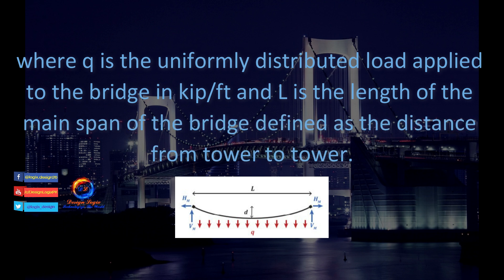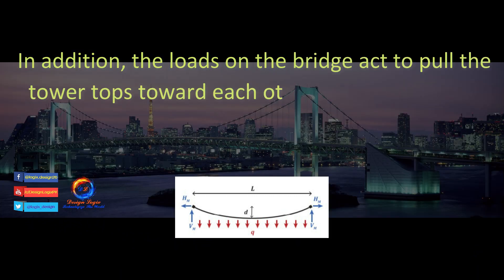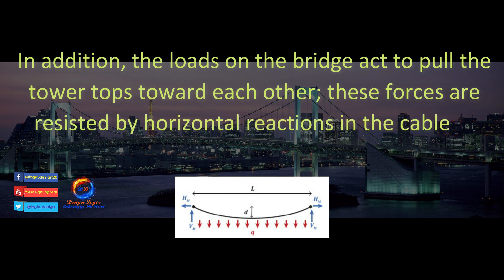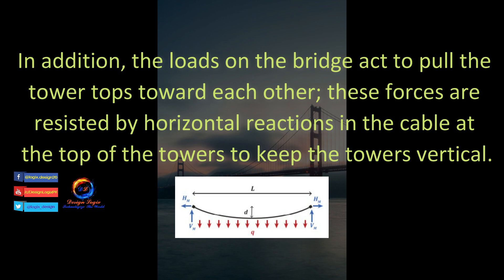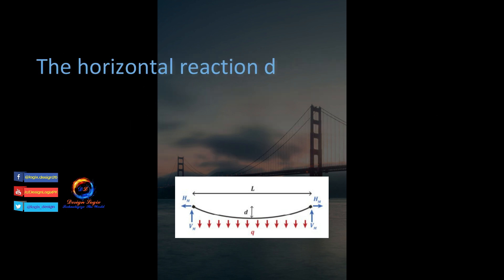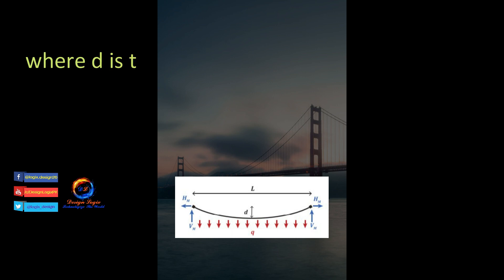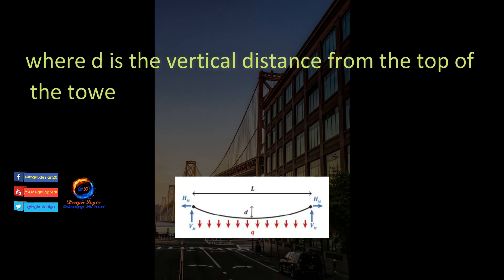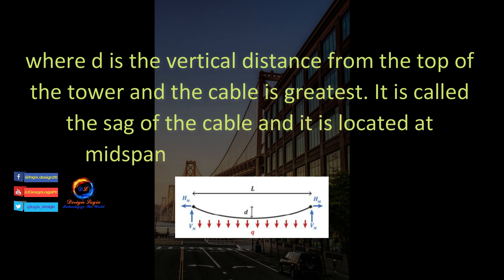In addition, the loads on the bridge act to pull the tower tops toward each other. These forces are resisted by horizontal reactions in the cable at the top of the towers to keep the towers vertical. The horizontal reaction due to the main span, Hm, at each tower is: Hm = q·L² / (8d), where d is the vertical distance from the top of the tower to the point where the cable sag is greatest — called the sag of the cable — located at mid-span, the center of the main span.